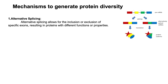Moving on to how protein diversity is generated. Protein diversity in biological systems arises from various mechanisms at different levels of the central dogma of molecular biology, which includes DNA replication, transcription, and translation. The first mechanism is alternative splicing: pre-mRNA molecules can be spliced in multiple ways to produce different mRNA transcripts from a single gene. These transcripts are translated into distinct protein isoforms, allowing inclusion or exclusion of specific exons, resulting in proteins with different functions or properties.